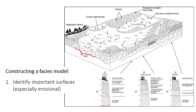Erosional surfaces in outcrop are often relatively easy to recognize because they're irregular surfaces — they may even look like a scour or channel dug into the underlying unit — and they can also have a deposit called a lag. A lag deposit is composed of coarse-grained materials, often like pebbles or shells, that are left behind when the erosive water flow forming a new channel carries away the finer-grained material, consistent with the relationship given by Shield's criterion.